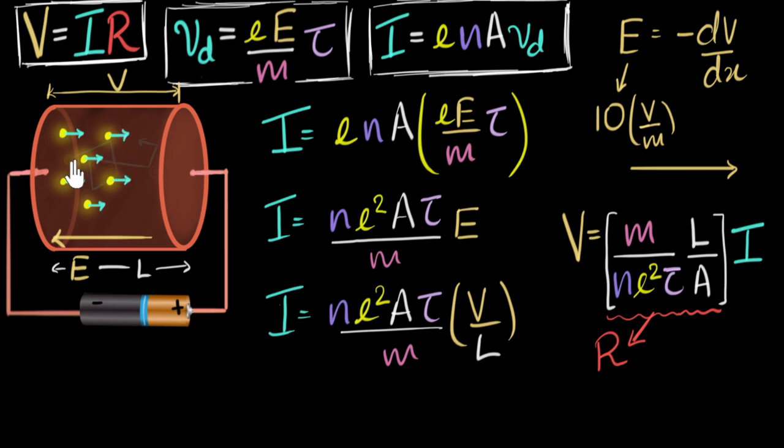Now imagine if there were no collisions at all. Then tau would be infinity. If there are no collisions at all, then the time for the next collision would be infinity. So if there were no collisions, tau would be infinity. If denominator was infinity, this resistance would have been zero. So you can now get this amazing thing. We are at the microscopic level, we are able to understand what causes resistance. It's the collisions between the electrons and the atoms.